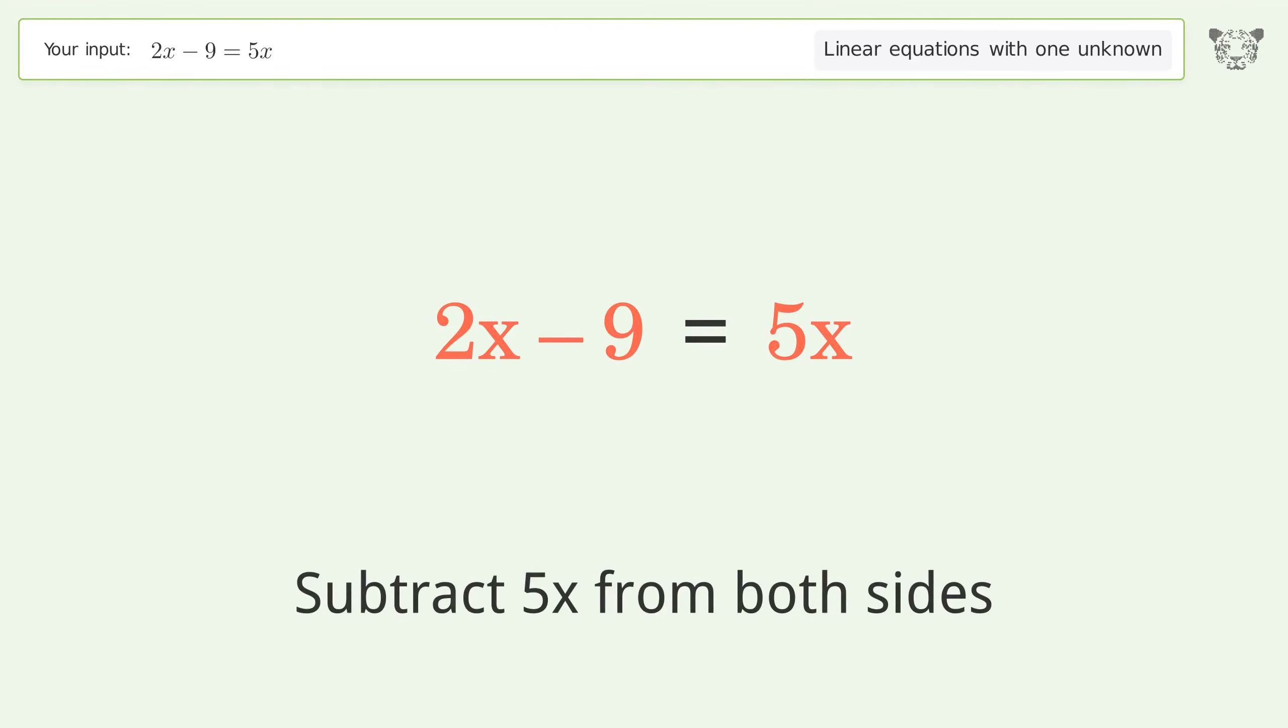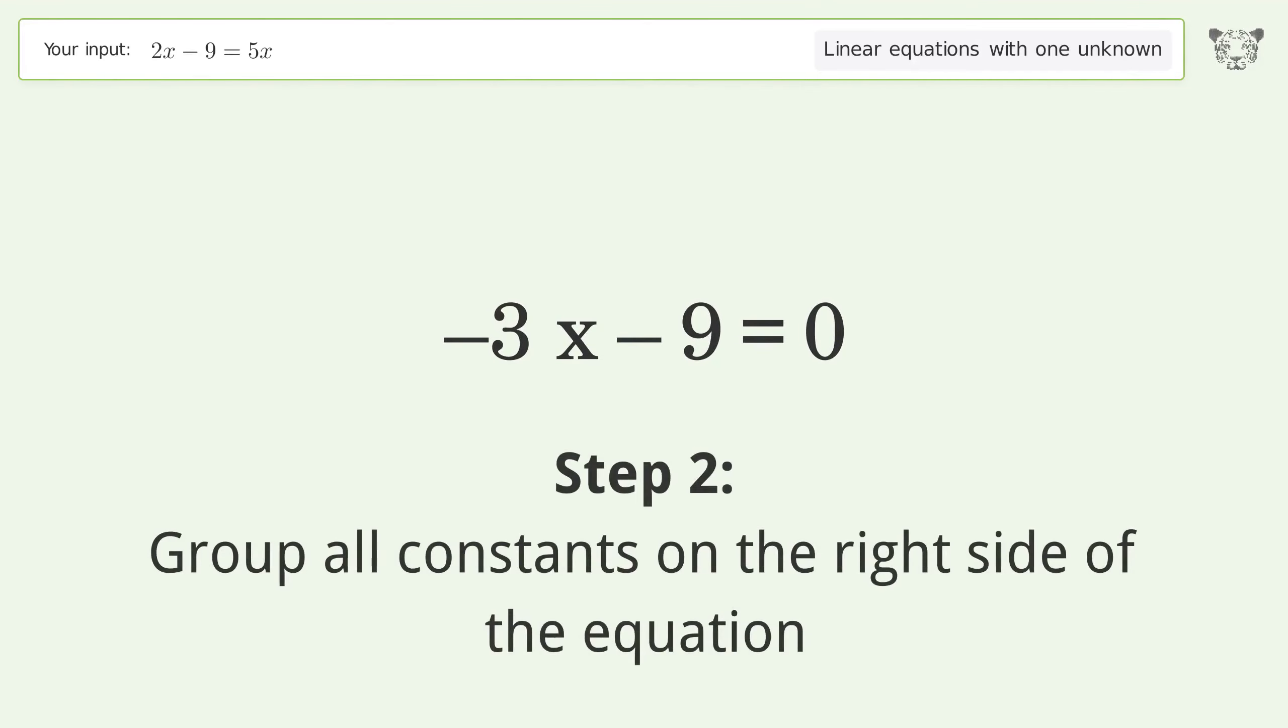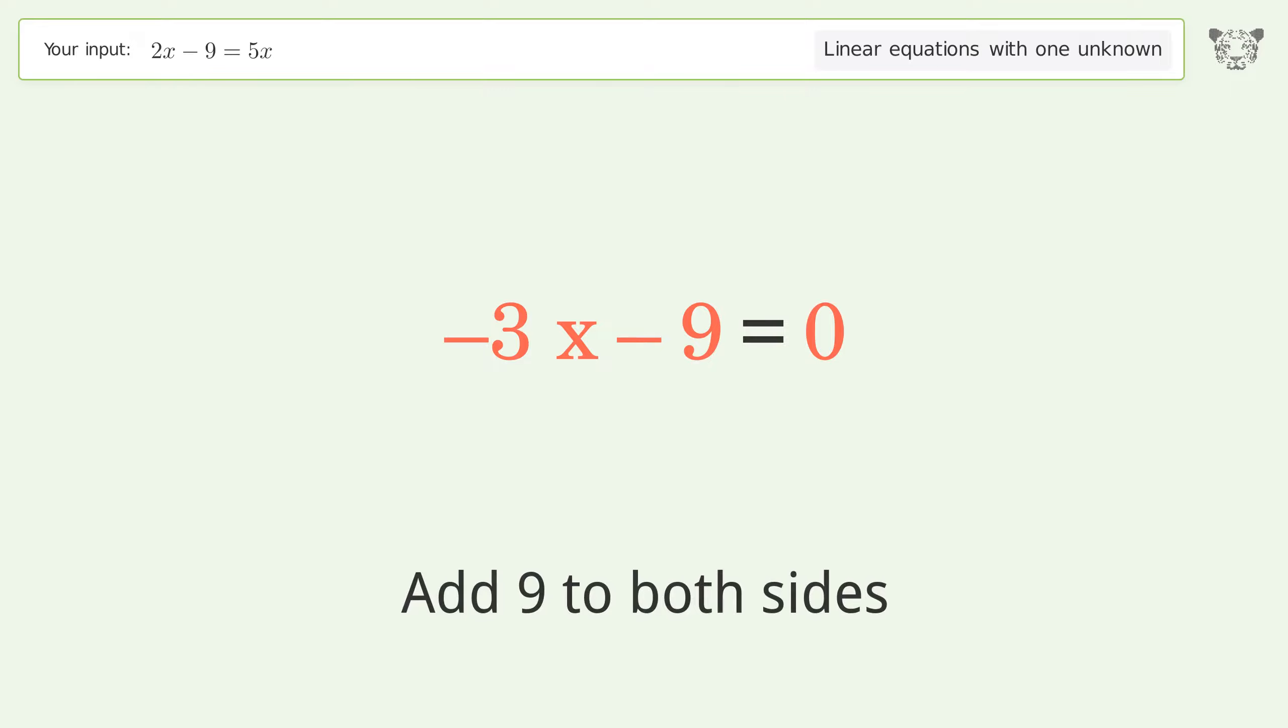Subtract 5x from both sides. Group like terms. Simplify the arithmetic. Group all constants on the right side of the equation. Add 9 to both sides. Simplify the arithmetic.